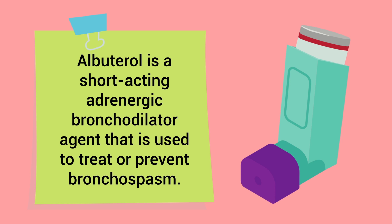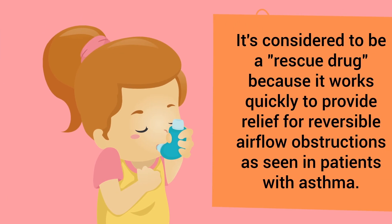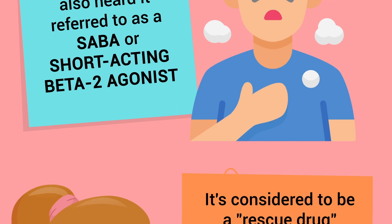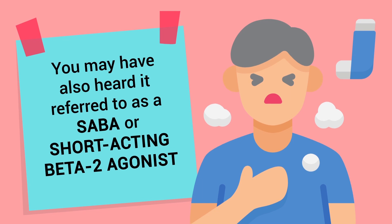Albuterol is a short-acting adrenergic bronchodilator agent that is used to treat or prevent bronchospasm. It's considered to be a rescue drug because it works quickly to provide relief for reversible airflow obstructions, as seen in patients with asthma. You may have also heard it referred to as a SABA, or short-acting beta-2 agonist.